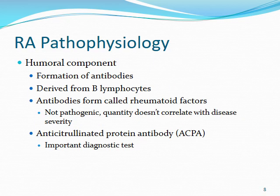There is a humoral component to RA: antibodies derived from B lymphocytes form rheumatoid factors, which are themselves non-pathogenic, and their quantity doesn't necessarily correlate with disease severity. We also see generation of ACPA (anti-citrullinated protein antibodies), which are important for diagnosing the disease beyond just physical exam and history.